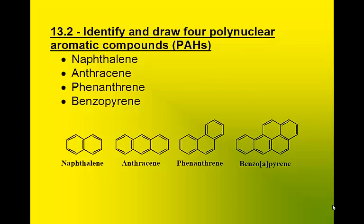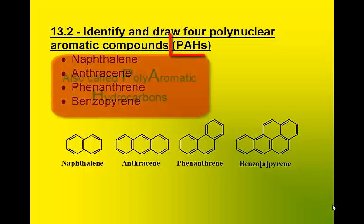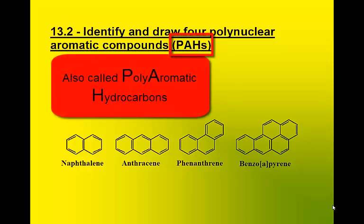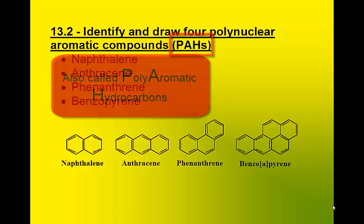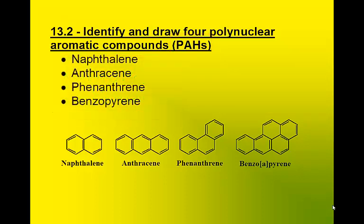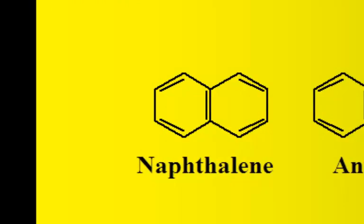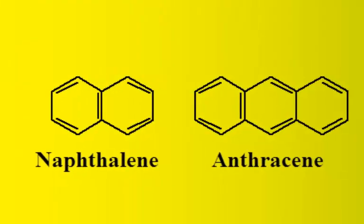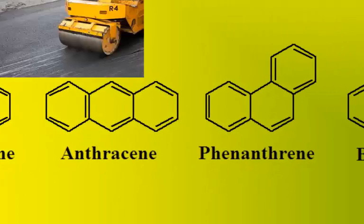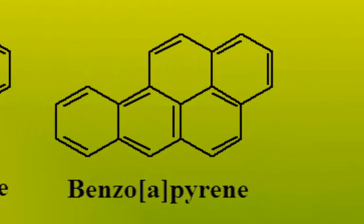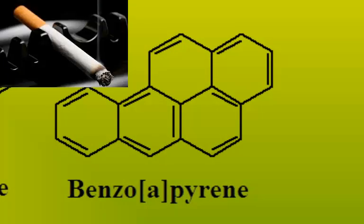Here are some common polynuclear aromatic compounds. These are fused benzene rings. You'll need to know how to name these compounds if given a structure, or draw a structure given a name. Naphthalene is the main ingredient in mothballs. Anthracene and phenanthrene are found in tar and asphalt. Benzopyrene is a known carcinogen.